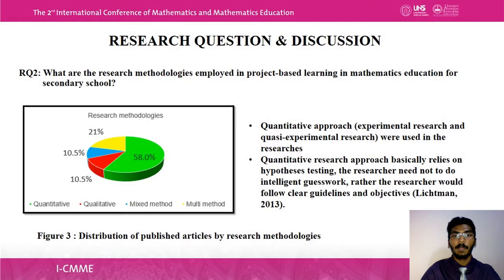The second research question is: what are the research methodologies employed in project-based learning in mathematics education for secondary school? Based on the 19 articles, quantitative, qualitative, mixed method, and multi-method approaches were used. Fifty-eight percent shows that researchers mostly used the quantitative approach, such as experimental and quasi-experimental research, which relies on hypothesis testing with clear guidelines and objectives.